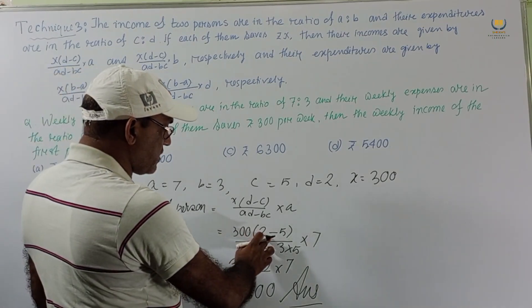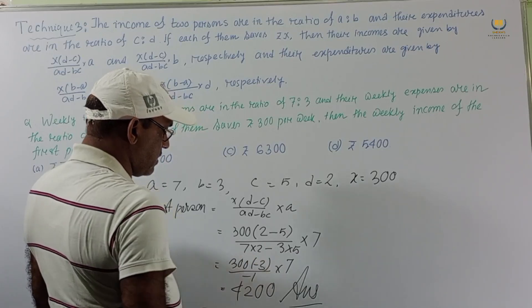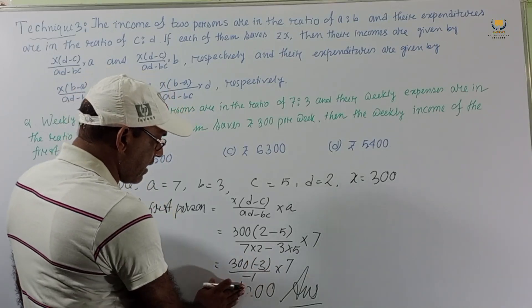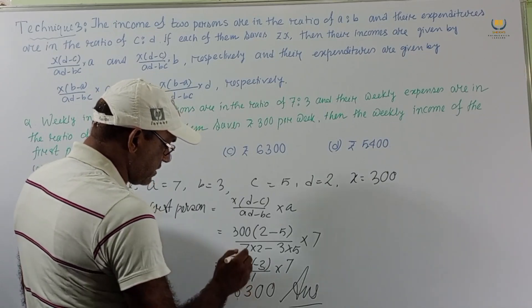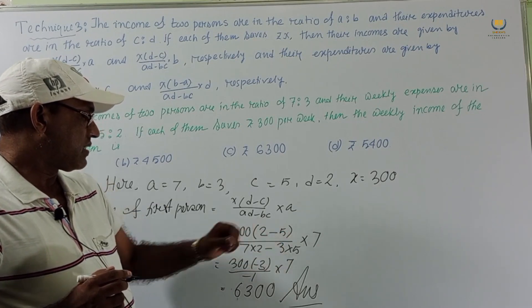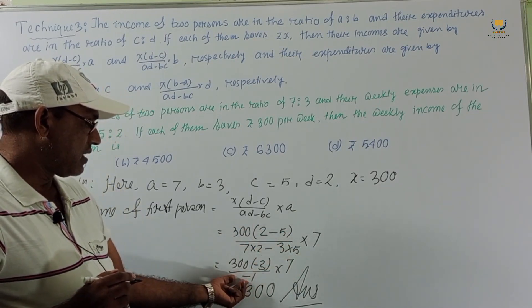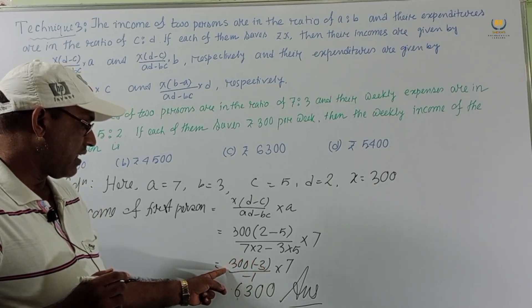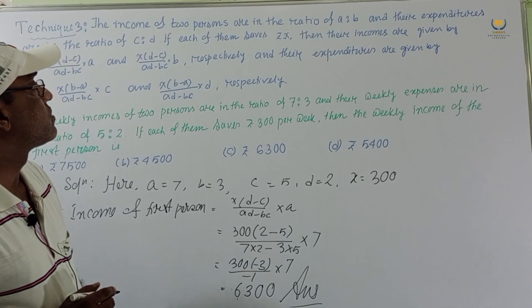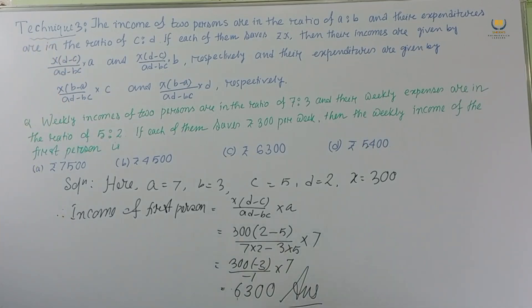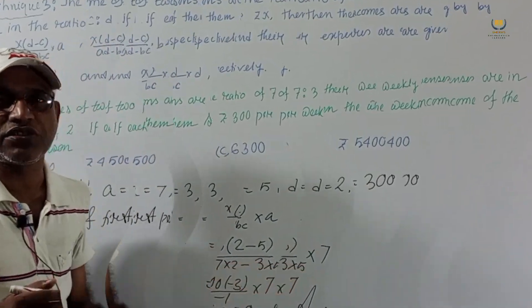Correcting the calculation: 2−5 = −3, and 14−15 = −1. So 300 × 3 / 1 × 7 = 6300. So option C is the correct answer.